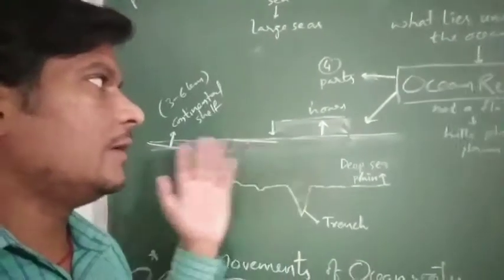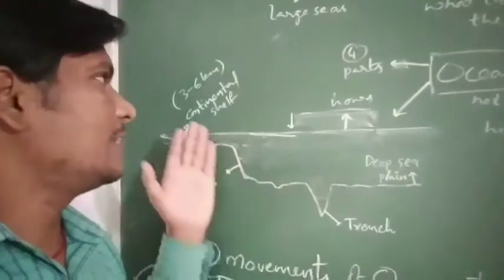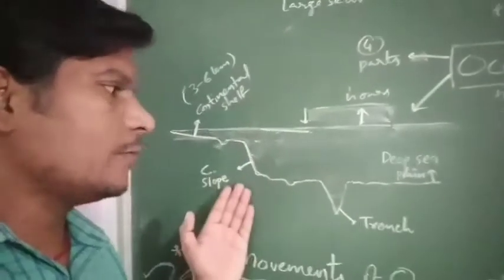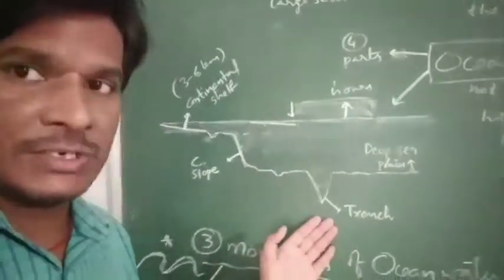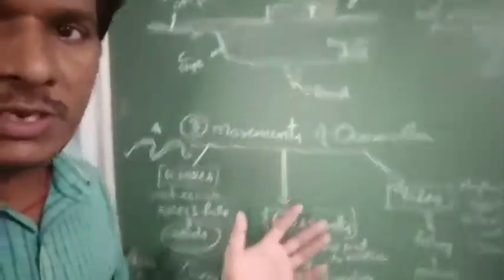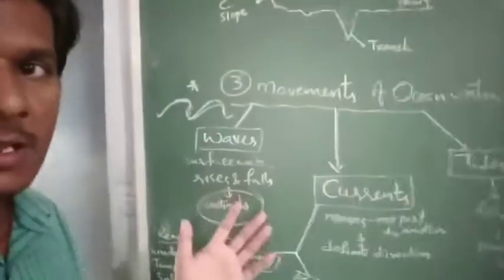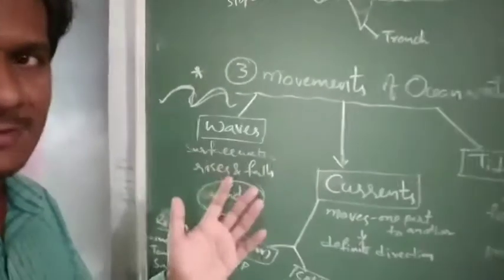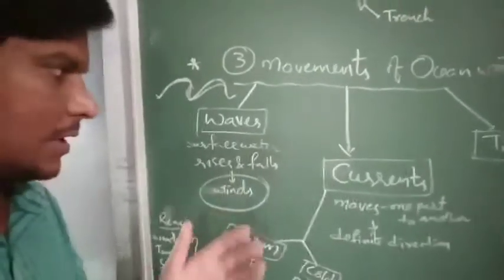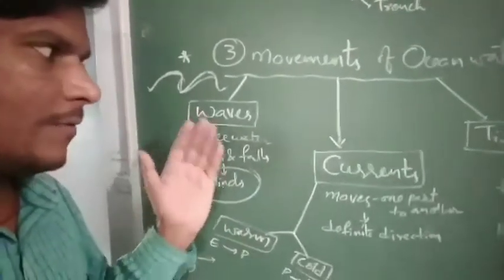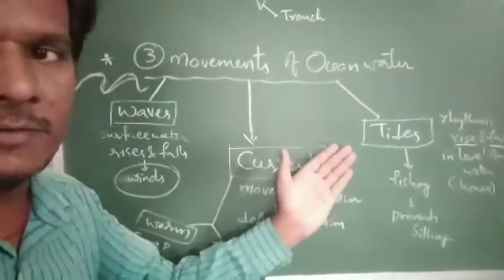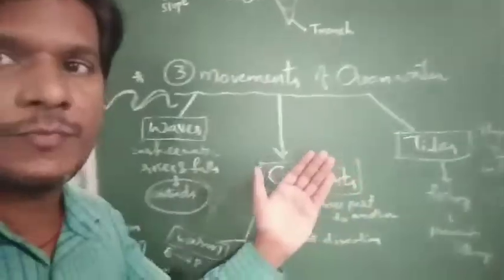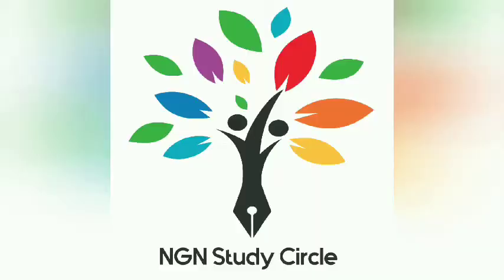In summary, the ocean floor is divided into four parts — continental shelf, slope, deep sea plain, and trench — and ocean surface water has three types of movements: waves, currents, and tides.